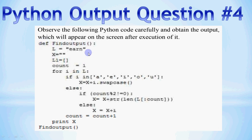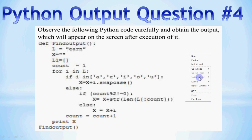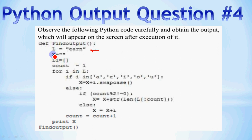As you can see here, there is a function called Def FindOutput. You have to tell us that when it is called, what will the output be on the screen? The best method for output questions is to go line by line slowly. The first line is L is equal to 'Earn', so L is a string in which 'Earn' is stored. Then there is a blank list L1 equal to empty square brackets, meaning the list is empty. There is a variable count which is 1.